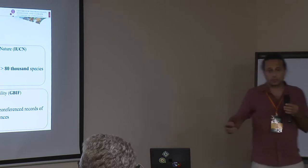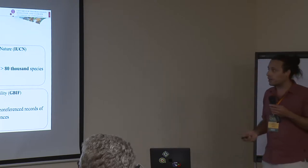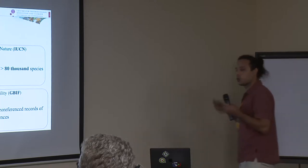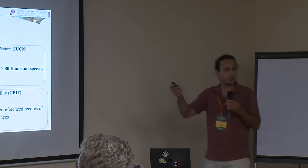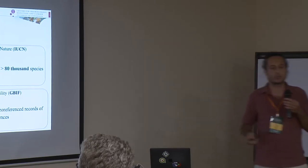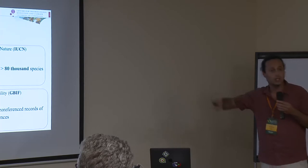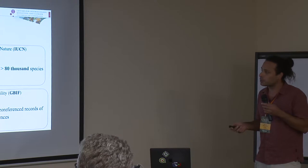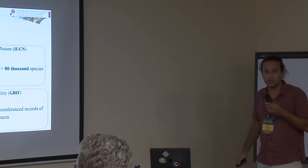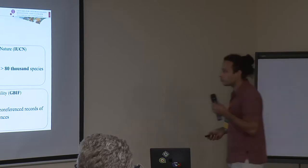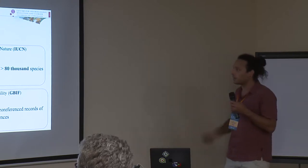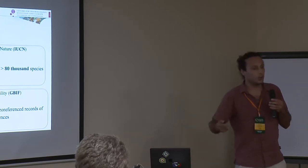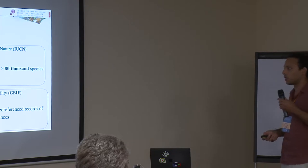Moving to the next level — species diversity. To create these biodiversity maps, we still have to start from sampling, observing species out in the field. Thousands of researchers and biologists collect samples and data from different species and deposit them in databases. One of the greatest is from IUCN — the International Union for Conservation of Nature — which has data for more than 80,000 species as polygons and shapefiles that researchers can use to create maps.